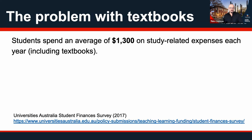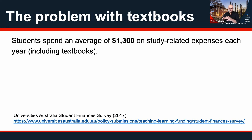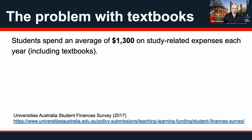According to the Universities Australia Student Finances Survey in 2017, students are spending an average in Australia of around $1,300 a year on study-related expenses, on top of actual tuition fees. This figure includes the cost of textbooks they need to purchase. Unfortunately I couldn't find similar information more recent than 2017, but I suspect the situation hasn't changed all that much.